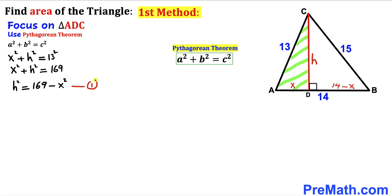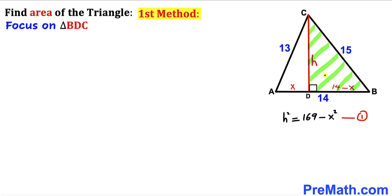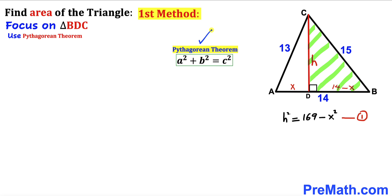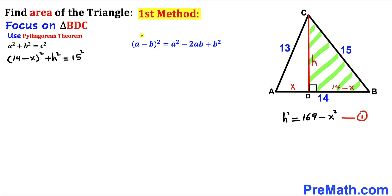Now let's focus on the other right triangle BDC and apply the Pythagorean theorem again. Here the hypotenuse is 15, so (14 − x)² + h² = 15². Recalling the identity (a − b)² = a² − 2ab + b², expanding the left side gives us 196 − 28x + x² + h² = 225. Let's call this equation number two.